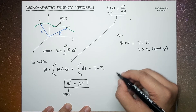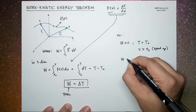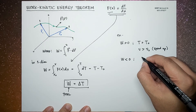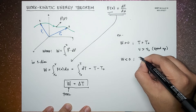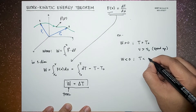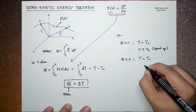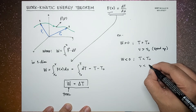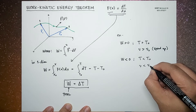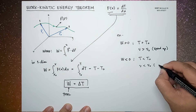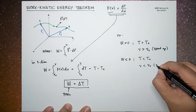On the other hand, if the work done is negative, that means the final kinetic energy is less than the initial kinetic energy. Similarly, the speed after would be less than the speed before, meaning the particle slows down.